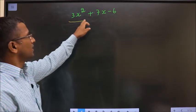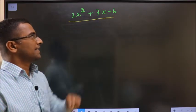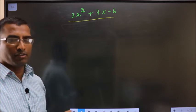Factorize 3x square plus 7x minus 6. How do we factorize it?